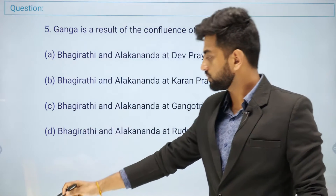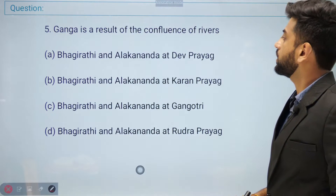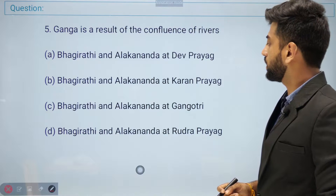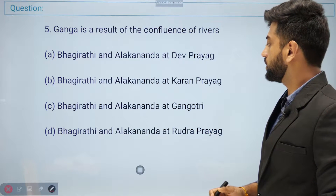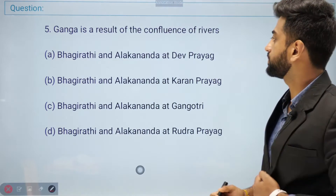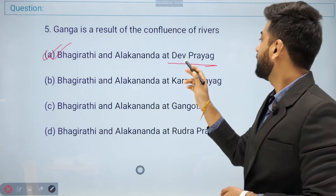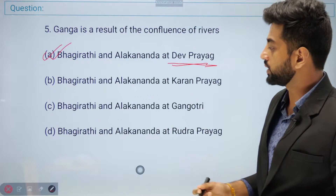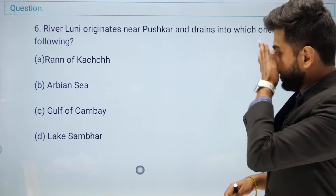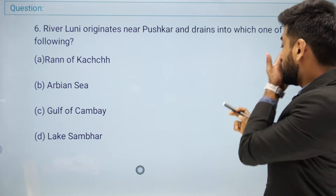Banka is a result of the confluence of rivers at a confluence point. Option A: Dev Prayag — Bhagirathi and Alaknanda meet at Dev Prayag.